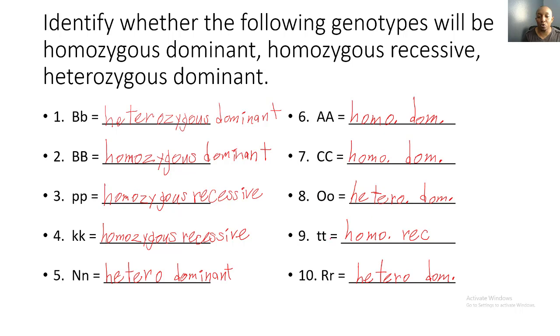Number eight: capital O and lowercase o — heterozygous dominant. Number nine: two lowercase t's — homozygous recessive. And number ten: capital R and lowercase r — heterozygous dominant.